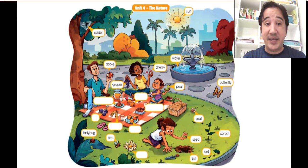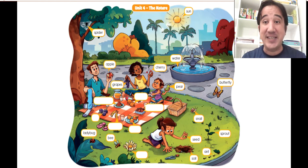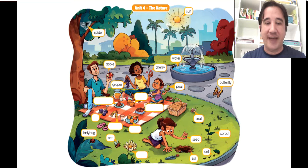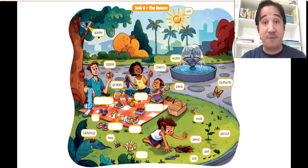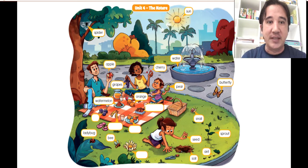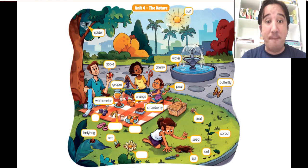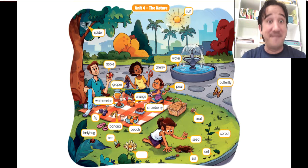And look, the little kid here, she's eating a pear. That's right. That's what she's eating. But they now only have apples, cherry, grapes and pear. Look what else they brought for their picnic. They brought orange, good. They brought watermelon, they brought strawberry. And what else? Fig. They brought banana and also peaches. Very good.